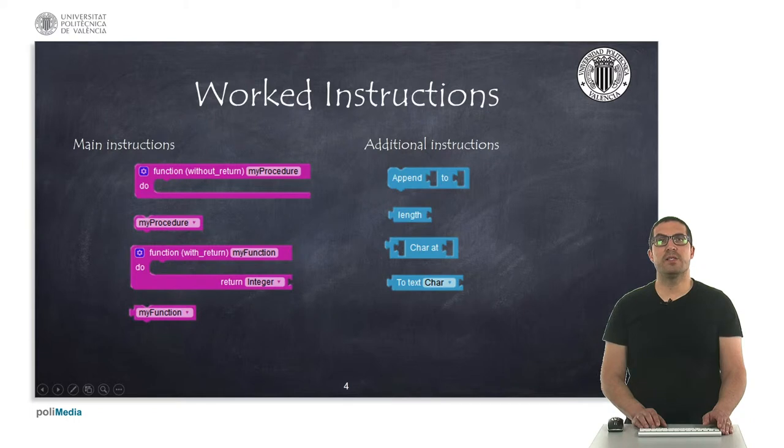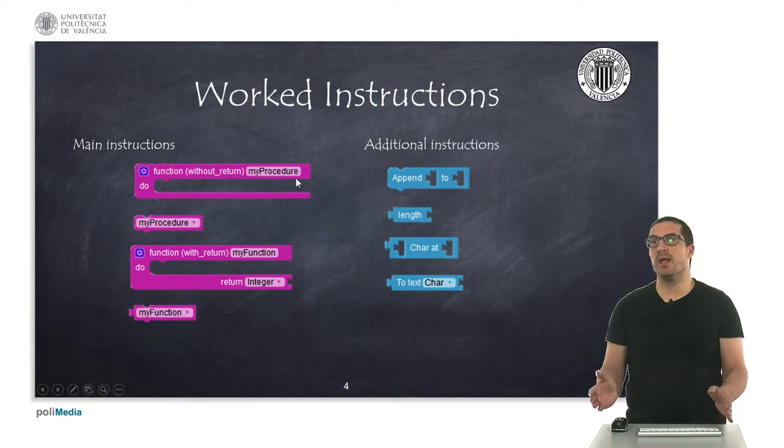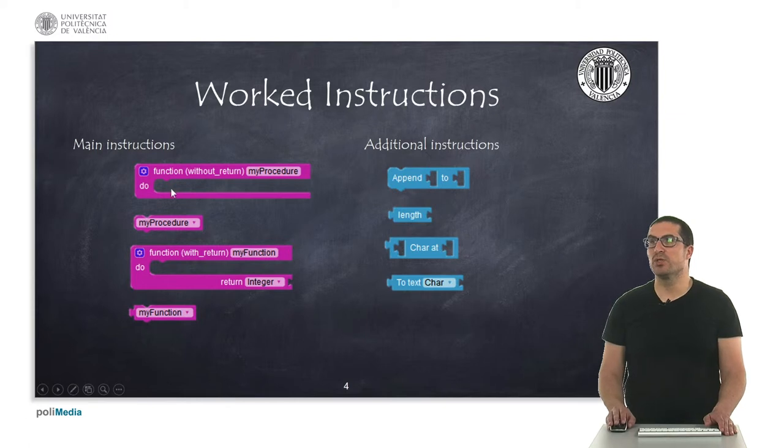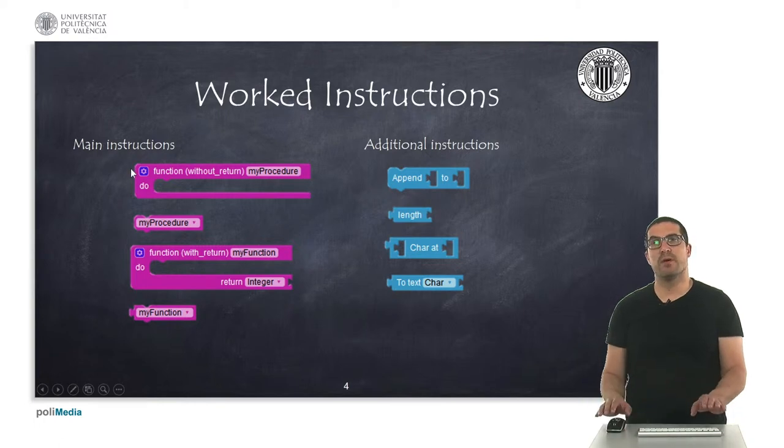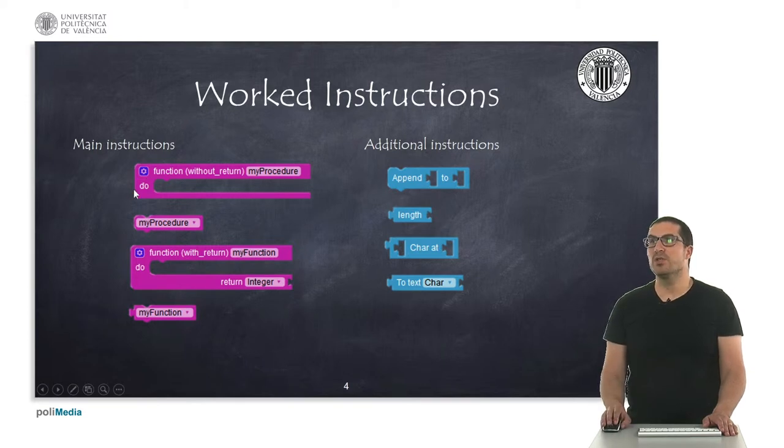These are the instructions that we will work with in this presentation. The first one is a procedure. A procedure is a routine which we can call any time in our main code and we have to separate things. This is the declaration of the function. We have to use this apart from the setup loop instruction. It will be declared in a separate section as you will see. And then this is to call the procedure.